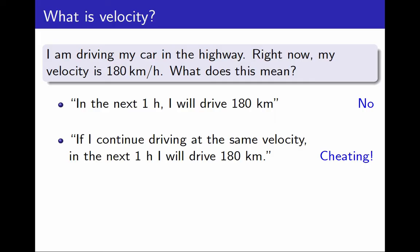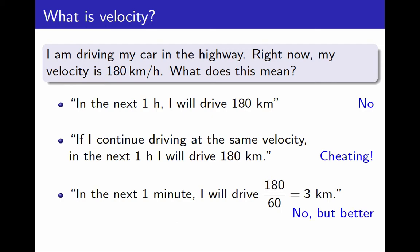Let's take a different approach. I know that in the next hour my velocity is likely to change, so instead of an hour, let's take a smaller time interval. In the next minute, I expect I will drive about 180 km divided by 60, which is 3 km. This is still not necessarily true, but it is better than my first attempt. It is at least more likely to be true.